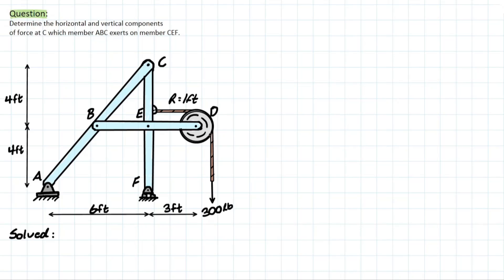For pulleys with continuous cables, a constant tension acts through the length of the cable. You can see there's a 300-pound force being evenly pulled through the entire system because this pulley is frictionless. However, the direction that the tension acts depends on the section you isolate for your free body diagram, and that will make sense as we start analyzing this problem.